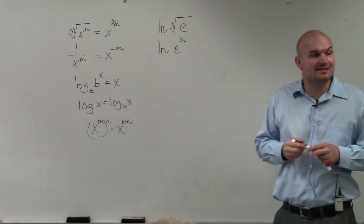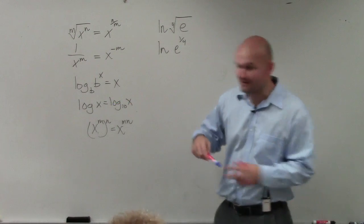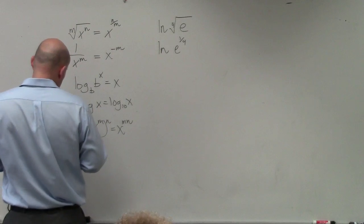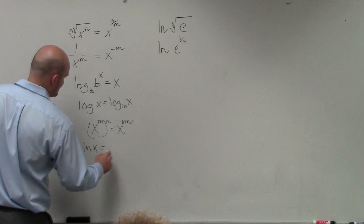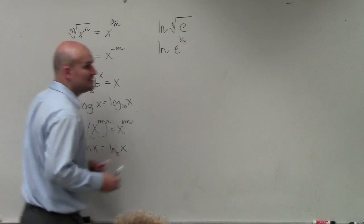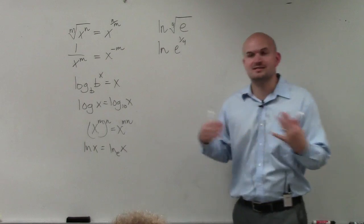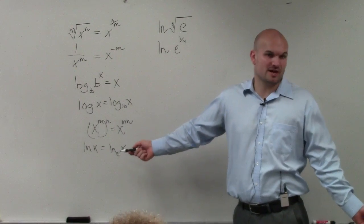And then all we need to simply remember, again, just like log of x equals log base 10 of x, ln of x is the same thing as log base e of x. It's just the natural logarithm. So we just use ln instead of log, but it just means that there's a base e. So we don't write it in there.